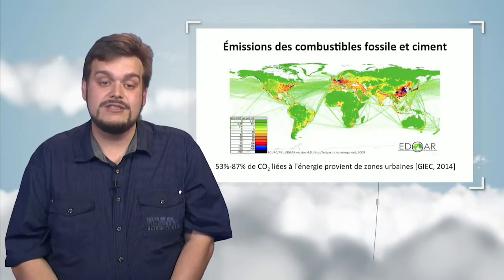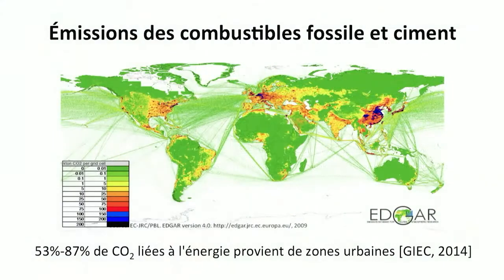On this map also, we can see areas such as Asia, India, Europe, and the United States, where we have the greatest share of greenhouse effect gas emissions. We also see the transportation between those areas — the routes followed by ships shipping everything we need for our economy, and also the routes followed by airplanes transporting tourists and passengers.